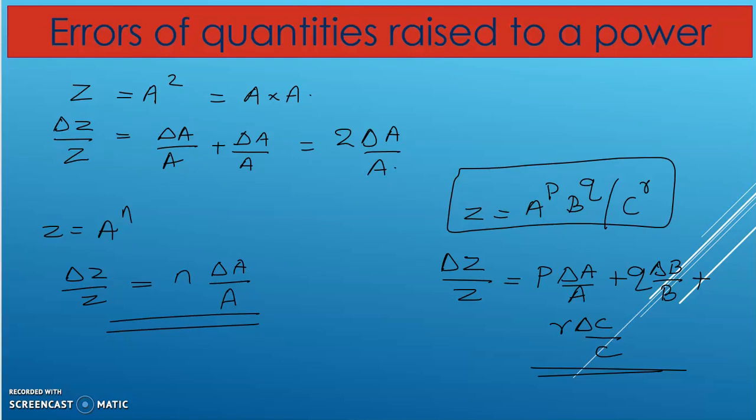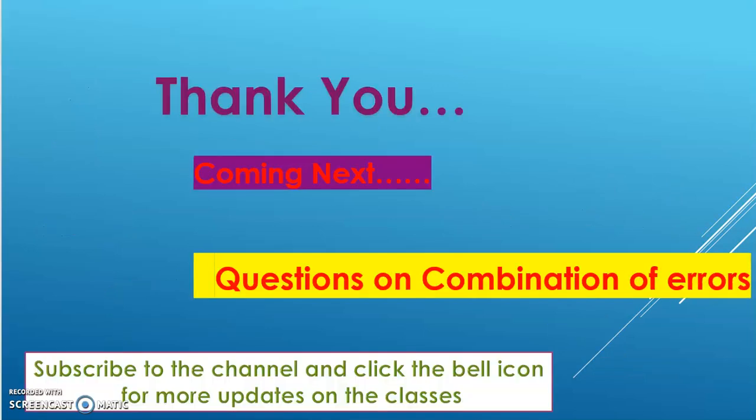For example, root x equals x raised to 1/2, so the error is (1/2) times delta x by x. To summarize: for addition and subtraction, absolute errors add; for multiplication and division, relative errors add.